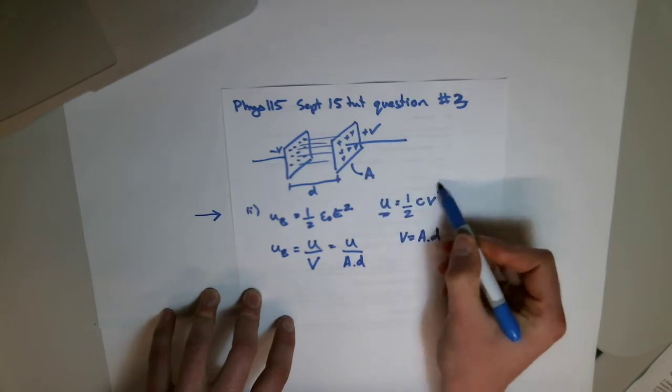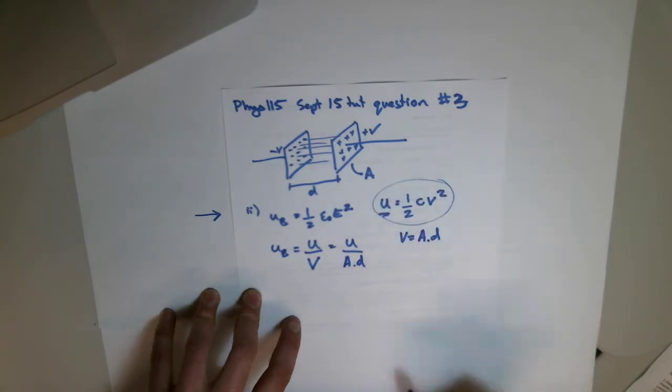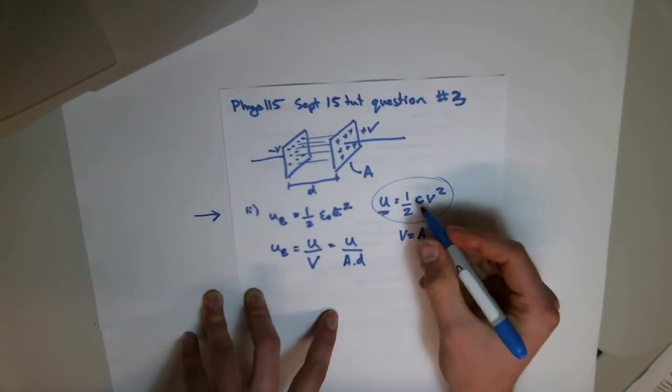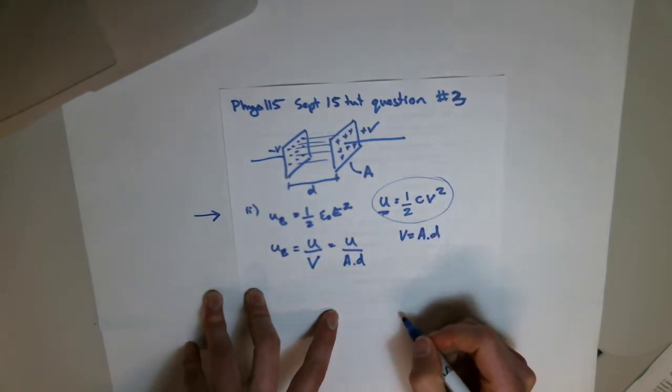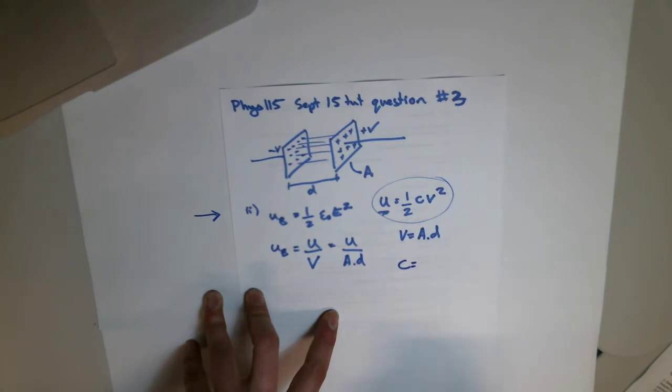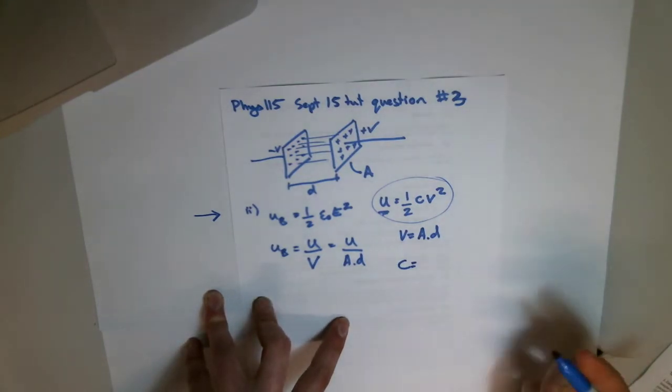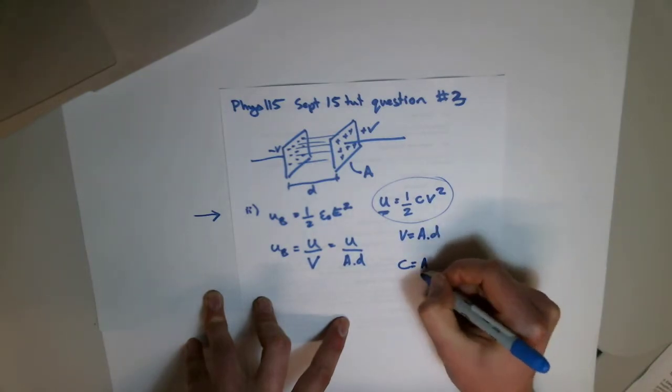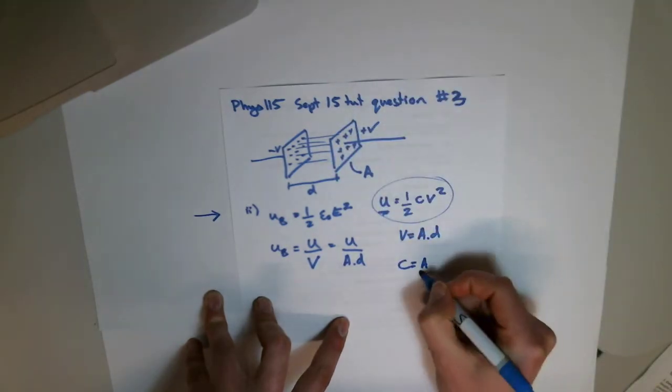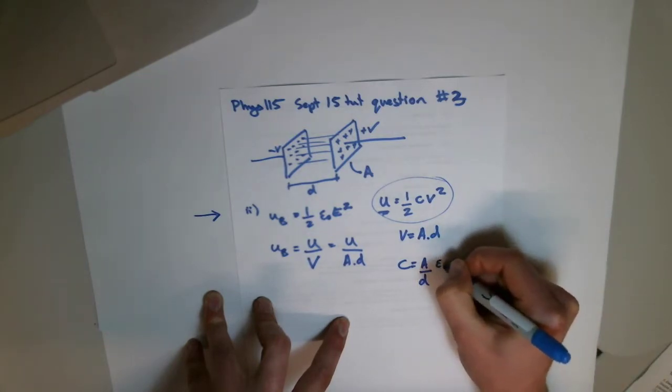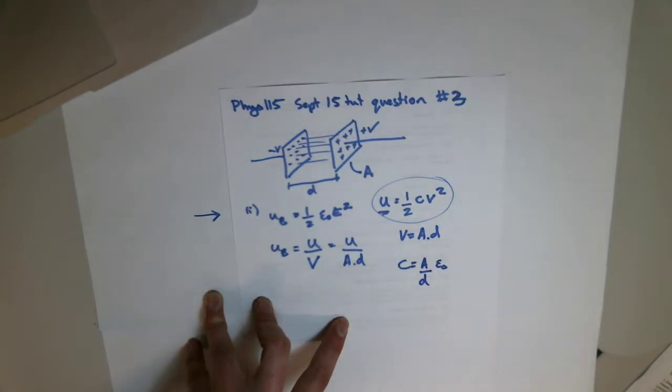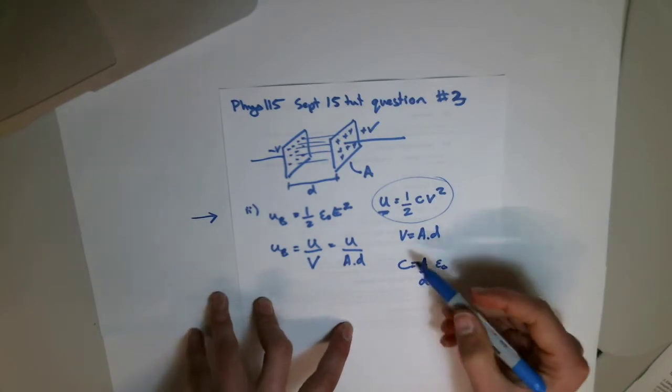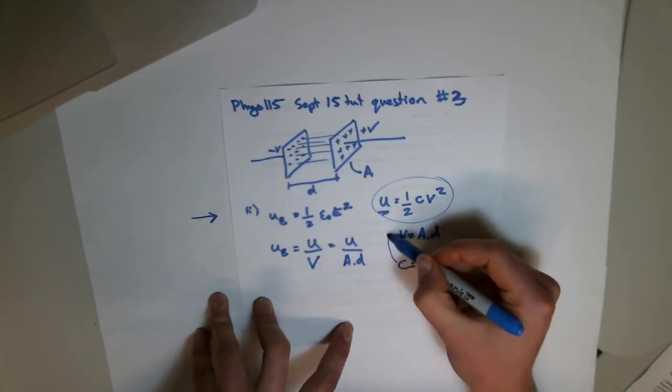Right, now we want to start thinking about things like this. We can also rewrite our capacitance as something different, so capacitance, if you look it up online or look in your textbook, you'll find that the capacitance of a capacitor is defined as the area of the capacitor plates divided by the distance between them times permittivity of free space. That is, if there is nothing between them. This number can change if there is a dielectric in there,